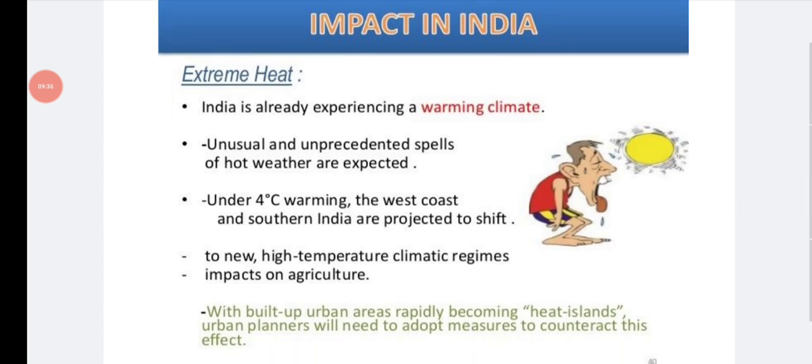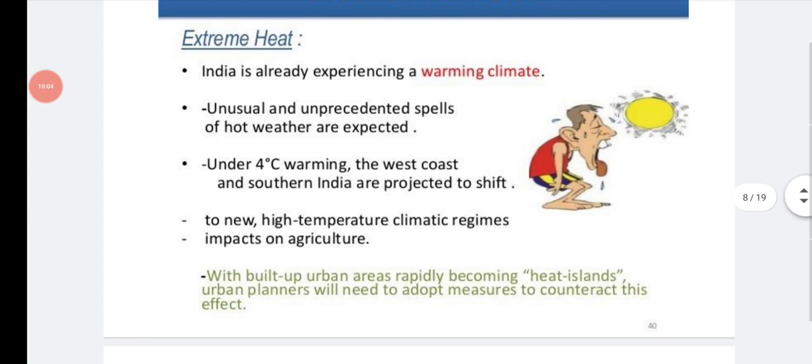So what was the impact in India? Due to extreme heat, India is already experiencing the warming climate. That's you know. So unusual and unprecedented spells of hot weather are expected. Under 4 degree Celsius warming, the west coast and southern India are projected to shift. There is increased heat in southern India. That's because of decreased forest area. To new high temperature climatic regions impacts on agriculture. There will be increased problem to agriculture. So if you want to grow rice or wheat or barley or anything, you need high water content in the soil. If it is not there, because of hot weather, that will be evaporated or there will be decreased water content in the soil. That will result in decreased food production.